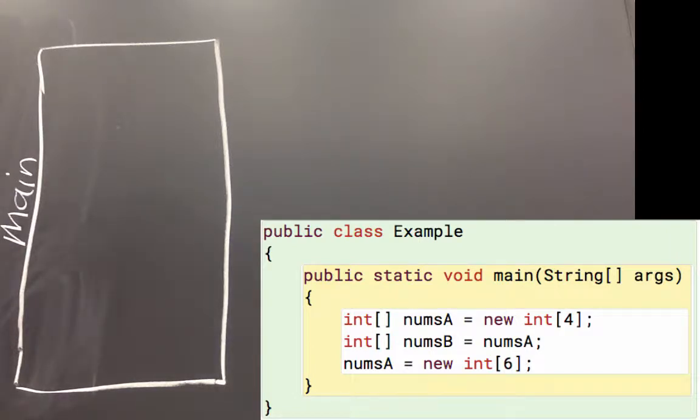The first line says int square bracket, that's an int array. Int array numsA gets the value new int, and then in square brackets we have three. Oops, I'm sorry, in the square brackets we have four.